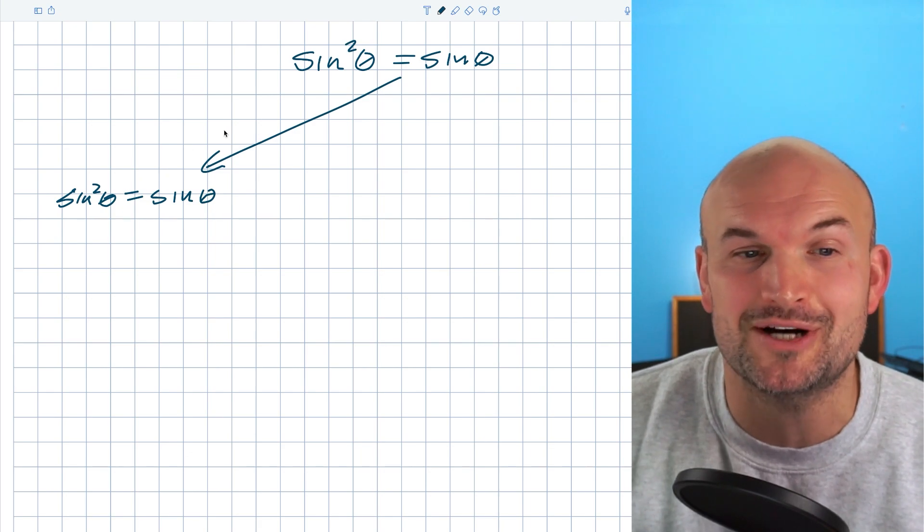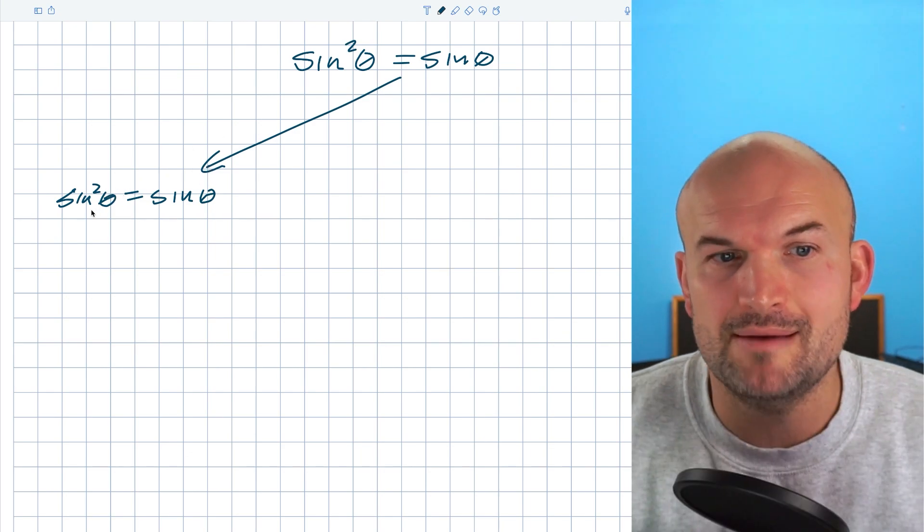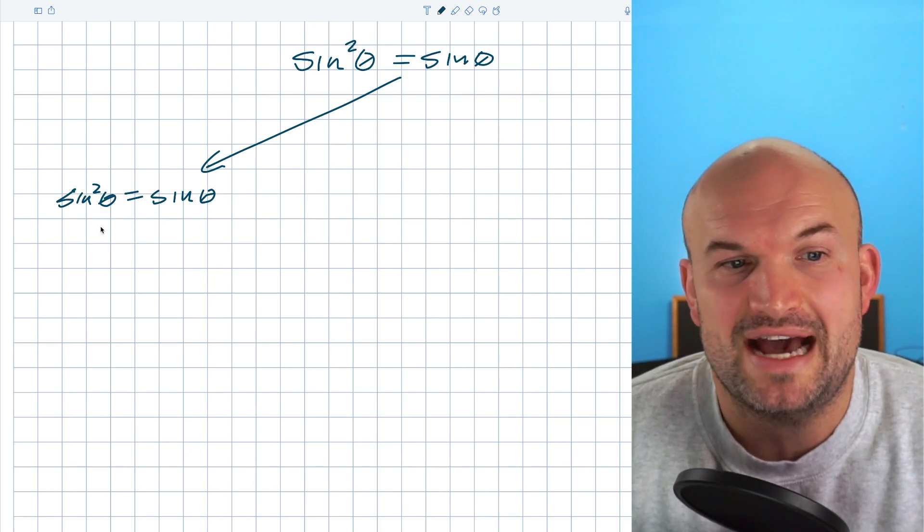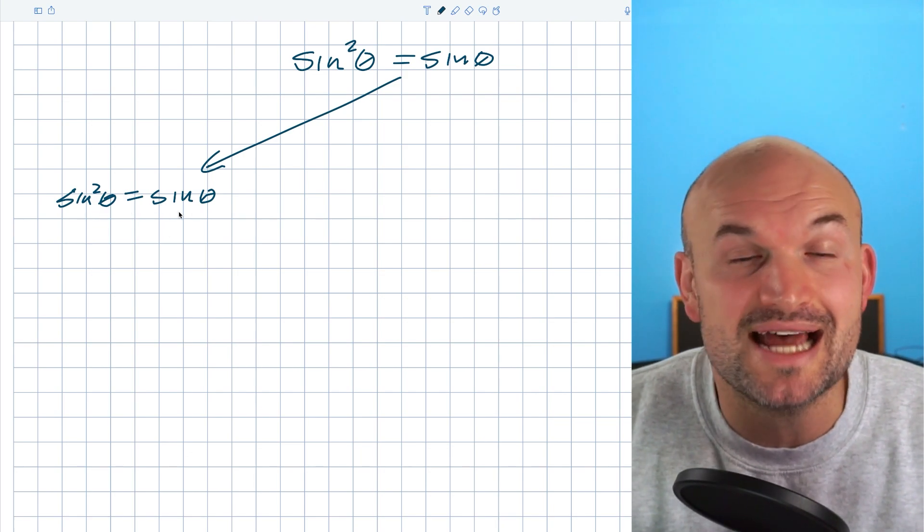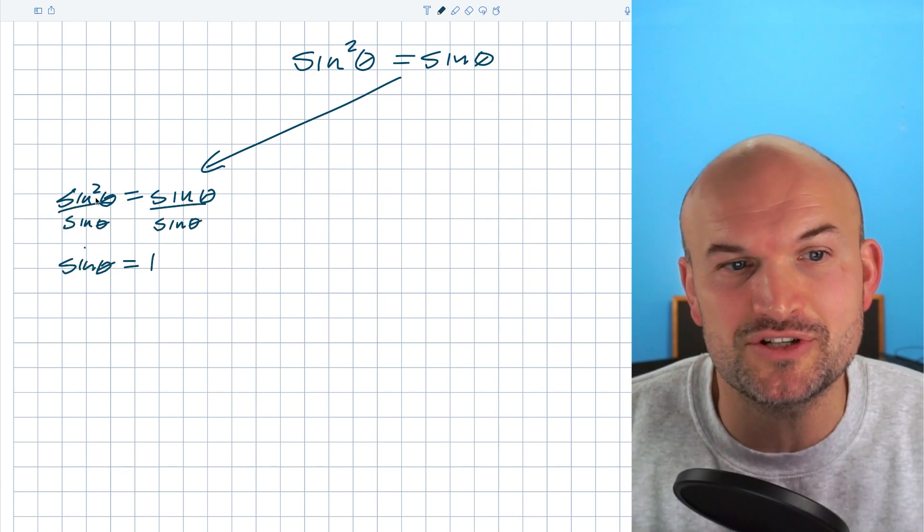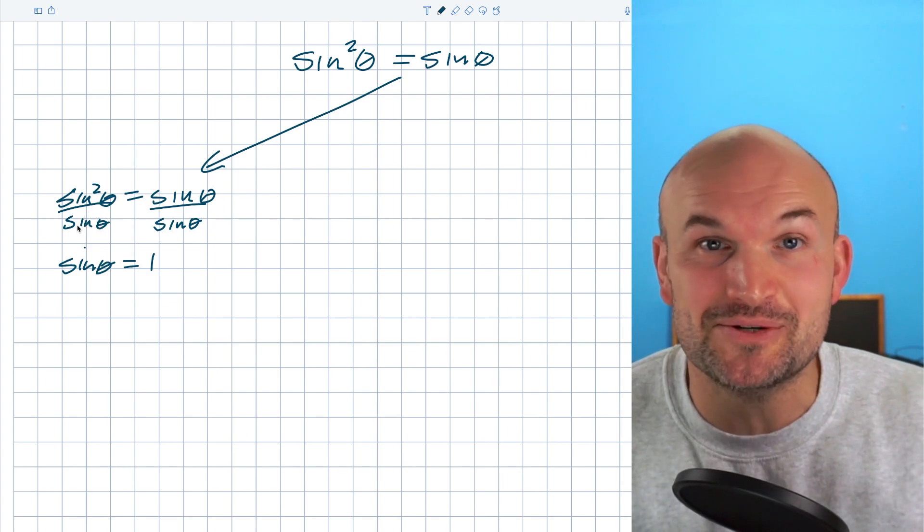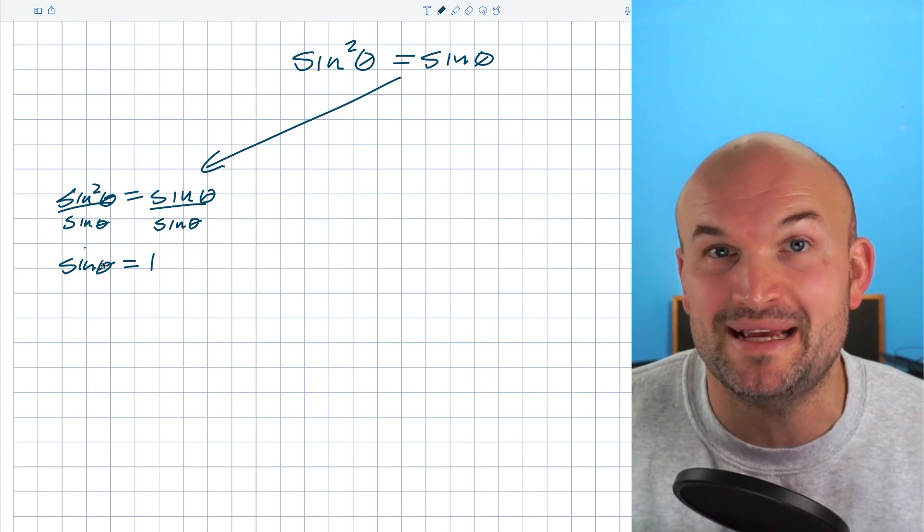The first mistake: when we have a sine on both sides it might be very tempting to just divide by sine on both sides to eliminate the sine on the right hand side. Now the problem with this is you just went from an equation that was a quadratic, by the fundamental theorem of algebra it's going to have two solutions, to now just being a linear equation meaning it's going to have one solution.